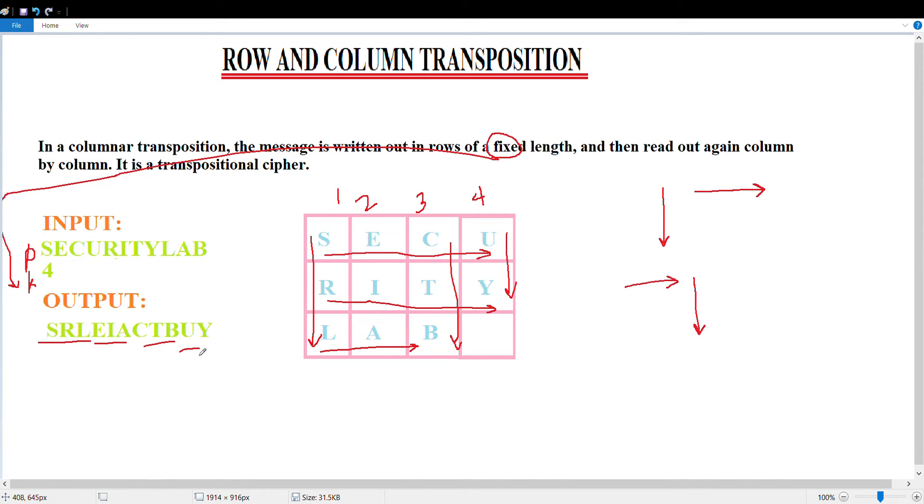Here, what we're doing is writing it row-wise and reading it column-wise. This is for encryption, which is the conversion of plaintext into ciphertext. For decryption